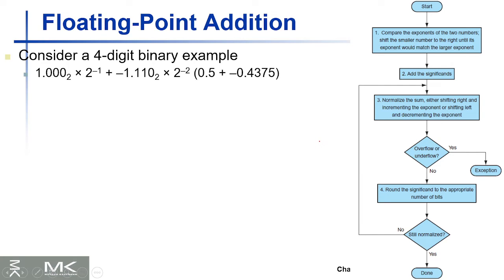Hello guys, welcome back to our videos. In this video we're going to explore how to do floating point addition — how to add two floating point numbers. For example, you have a binary floating point number 1.000 times 2 to the minus 1, plus minus 1.110 times 2 to the power of minus 2, which is basically plus 0.5 plus minus 0.4375.